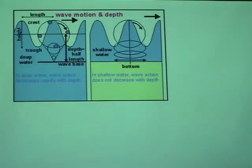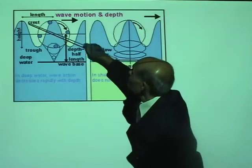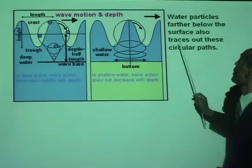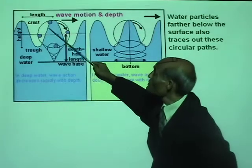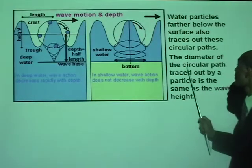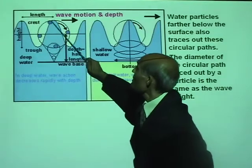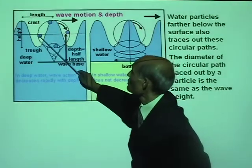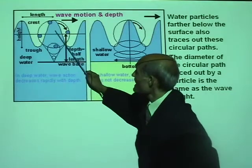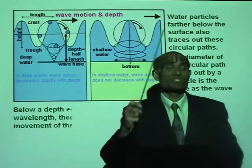The wave height is the distance from the crest to the trough. Water particles farther below also trace out circles, and the diameter of the circular path traced by a particle is the same as the wave height. Below a depth equal to half the wavelength, there is no circular movement of the particle — this indicates how deeply the wave disturbance reaches.